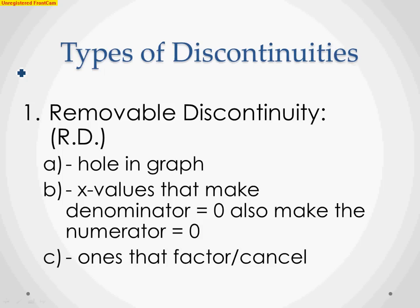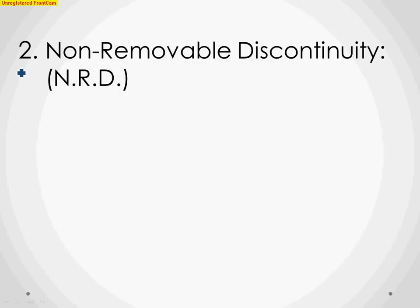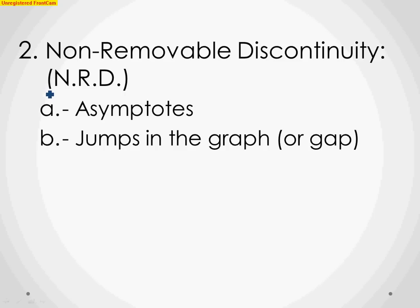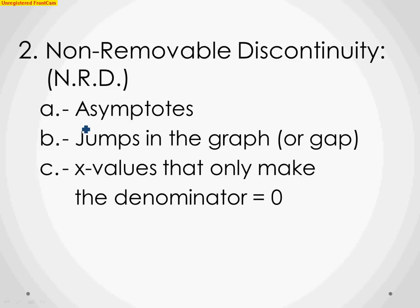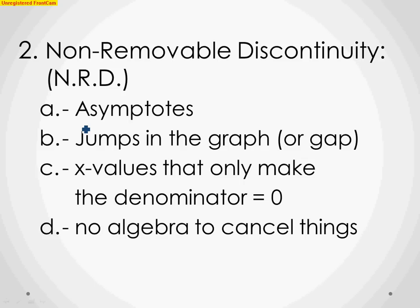The other type is a non-removable discontinuity, abbreviated NRD. These are asymptotes, jumps, or gaps on the graph. These are x values that only make the denominator equal to zero, with no algebra to cancel anything. So we have removable discontinuities — ones that can be factored out — and non-removable discontinuities — ones that stay in the denominator. Let's look at four examples using both an analytical and a graphical approach.